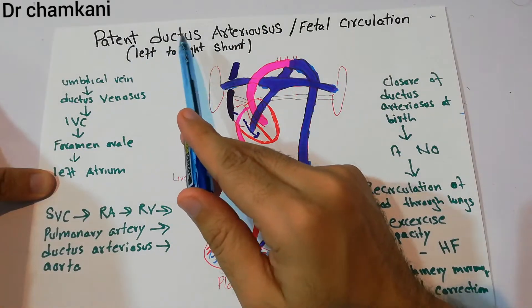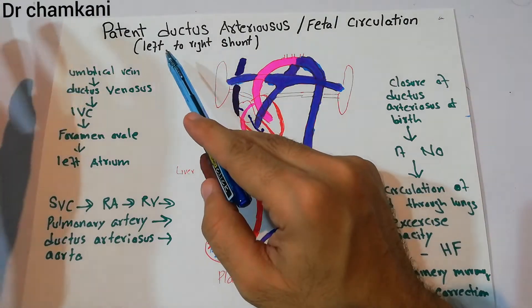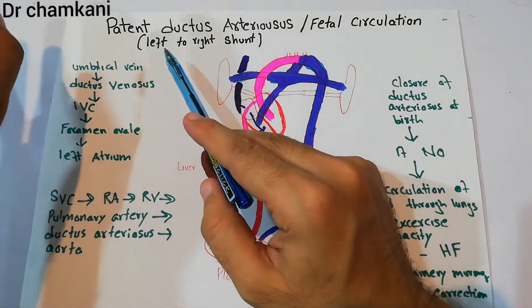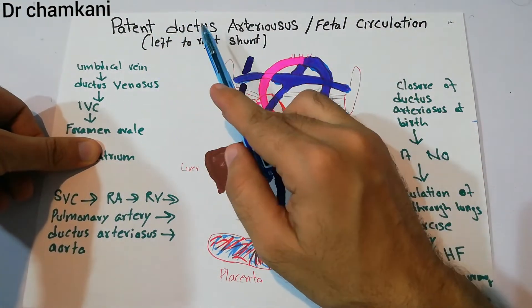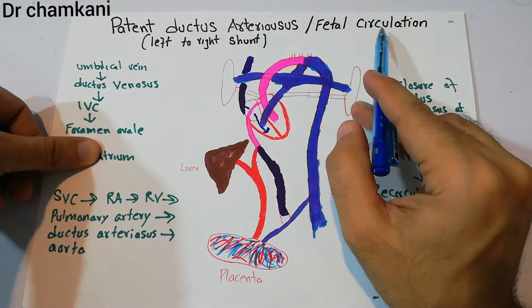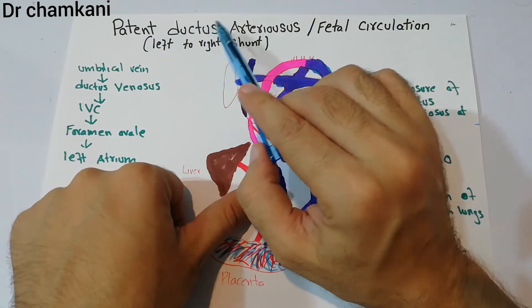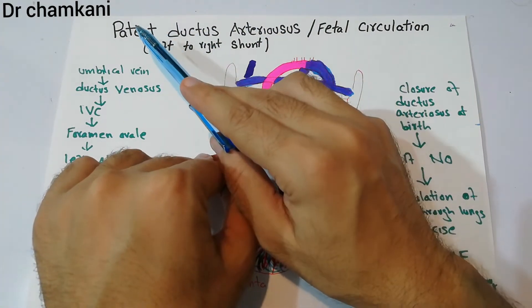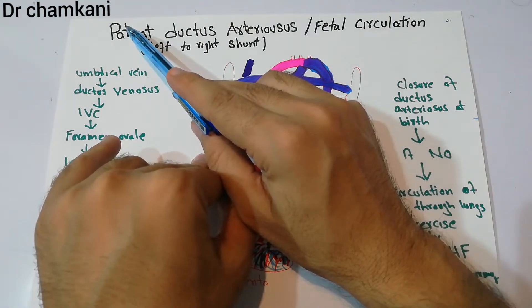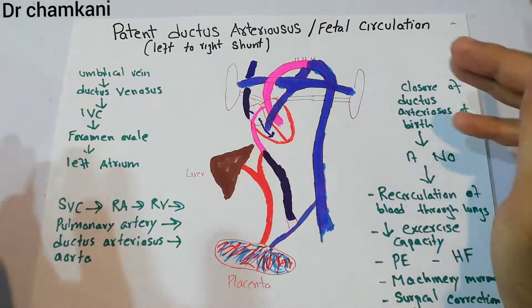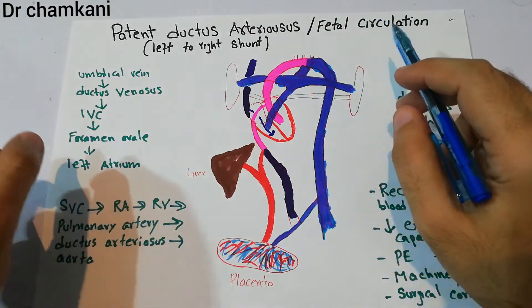Today we are going to talk about patent ductus arteriosus, which is basically a congenital anomaly and a left-to-right shunt — it brings blood back from the left side of the heart to the right side, from the left circuit to the right circuit. To understand patent ductus arteriosus, we must first understand fetal circulation, and why the ductus arteriosus remains patent after birth.